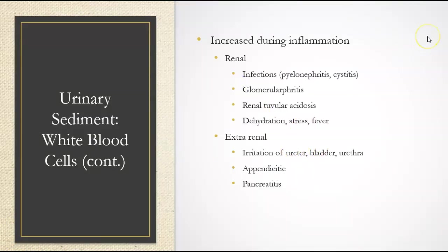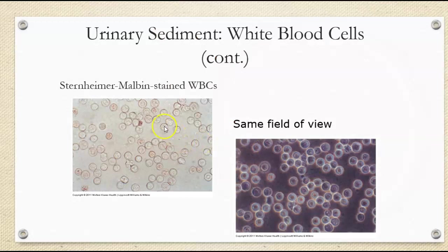We can see white cells in the sediment increased during inflammation. In your renal system, that's infectious pyelonephritis or cystitis, glomerulonephritis, renal tubular issues, dehydration, stress, and fever. Extra-renal causes would be irritation of the ureter, bladder, urethra, appendicitis, and pancreatitis. Here are some stained white cells as well — remember we don't use stain typically in the lab — and then some phase contrast as well.